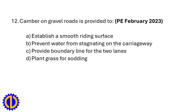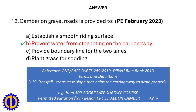Camber on gravel roads is provided to: a. Establish a smooth riding surface, b. Prevent water from stagnating on the carriageway, c. Provide boundary line for the two lanes, d. Plant grass for sodding. Answer: b. Prevent water from stagnating on the carriageway. Reference: PNS BAFF Paves 289, 2019 — crossfall is a transverse slope that helps the carriageway to drain properly. In the DPWH Blue Book 2013, crossfall and camber are considered equivalent terms.